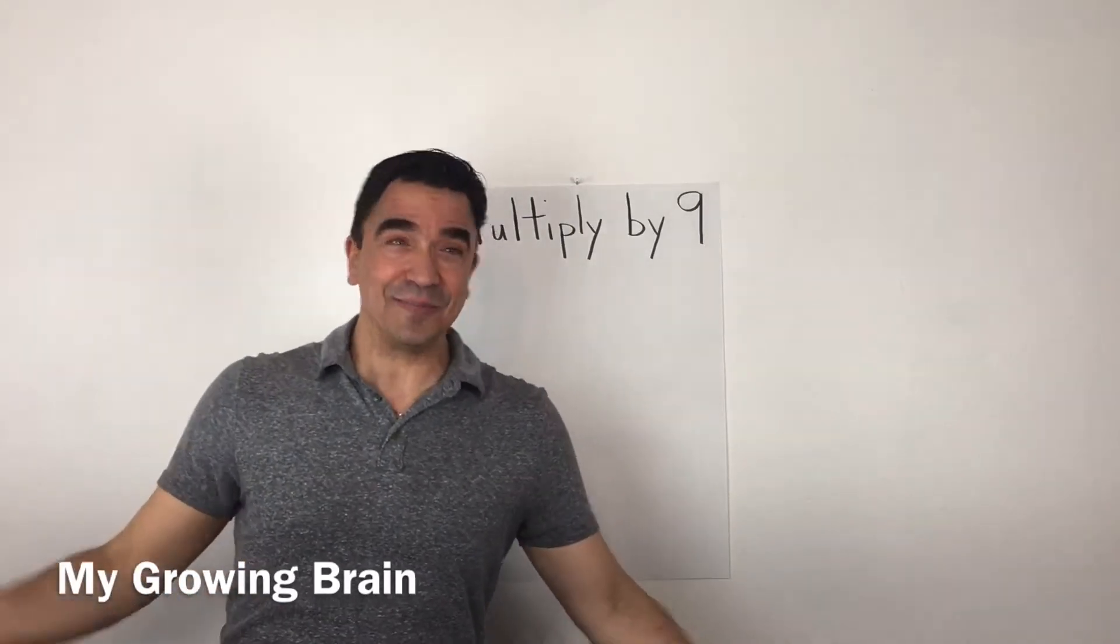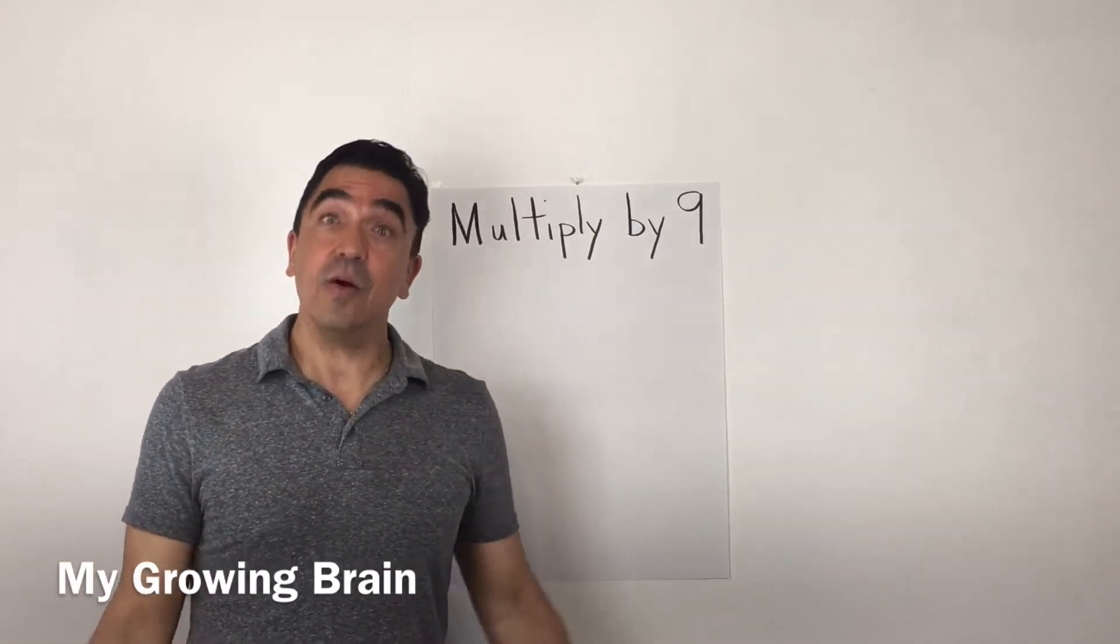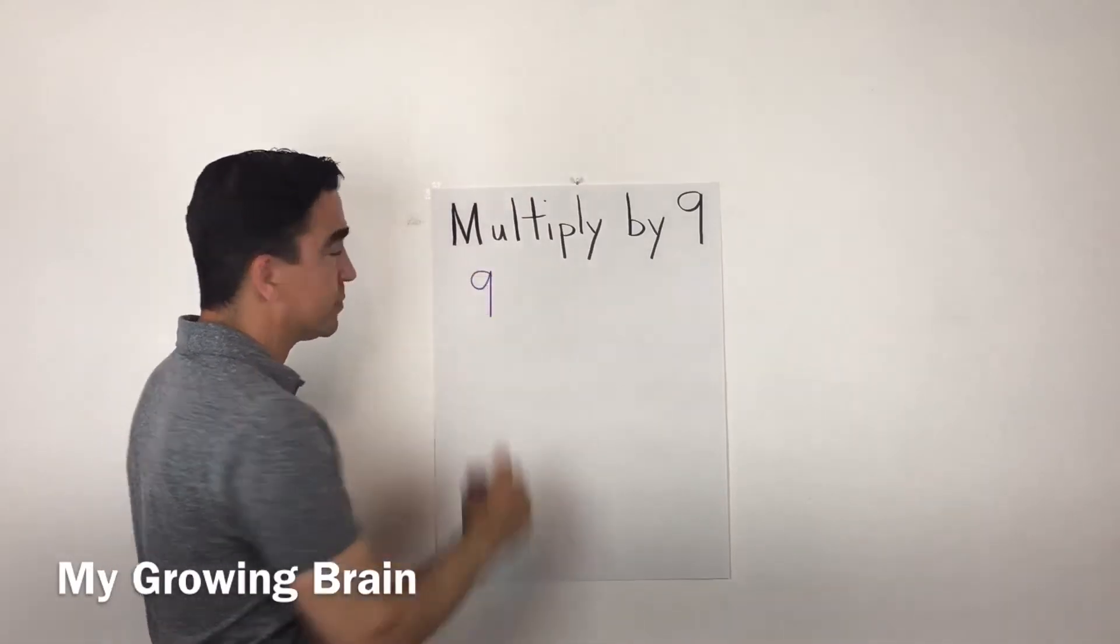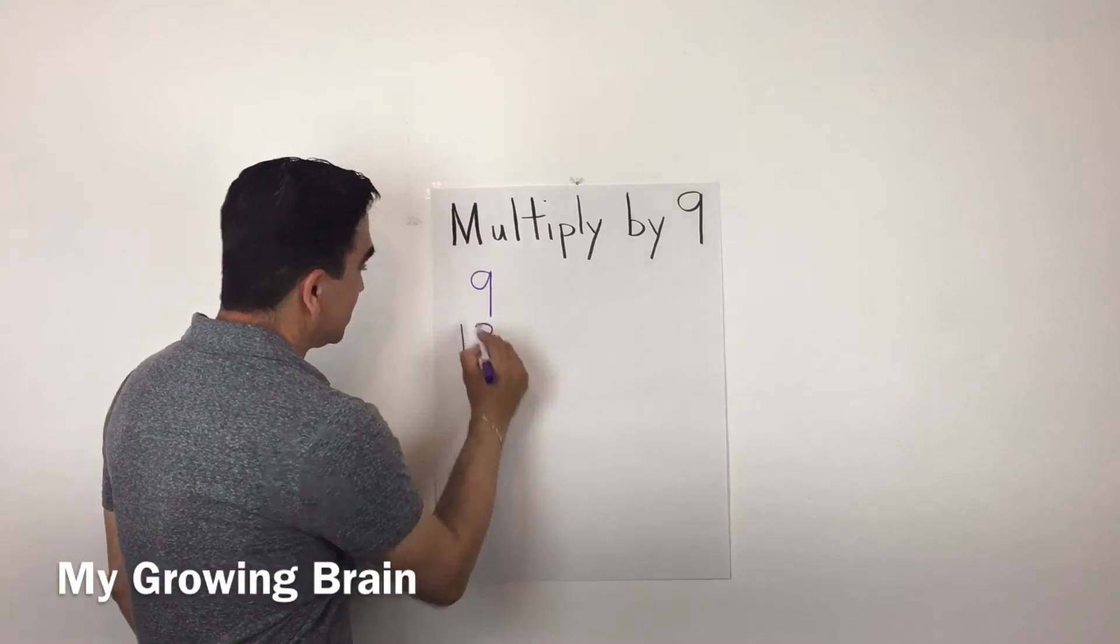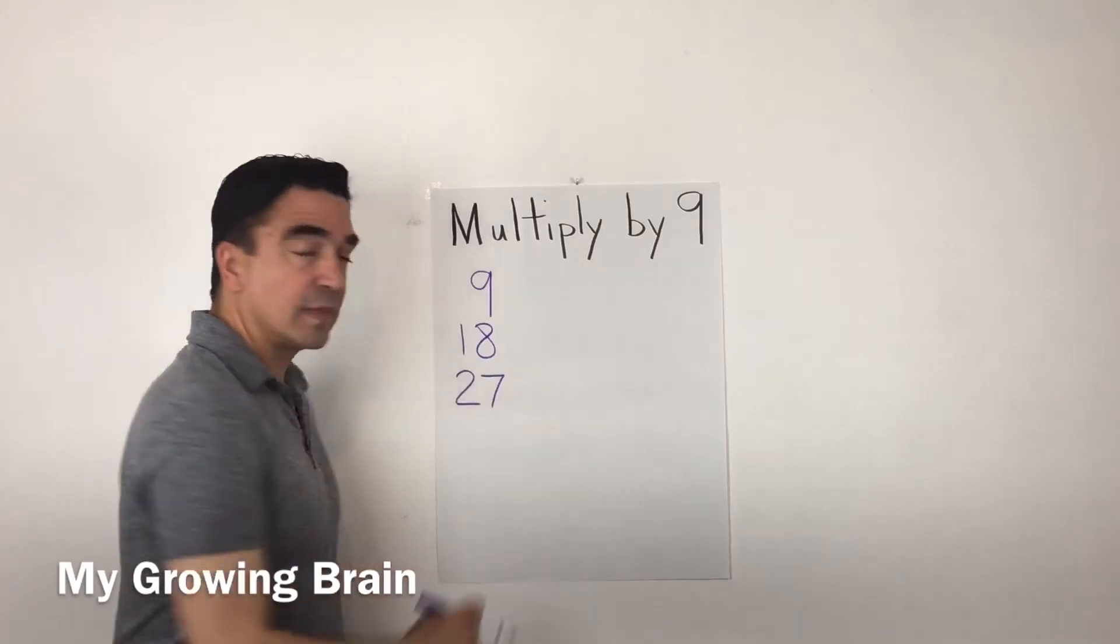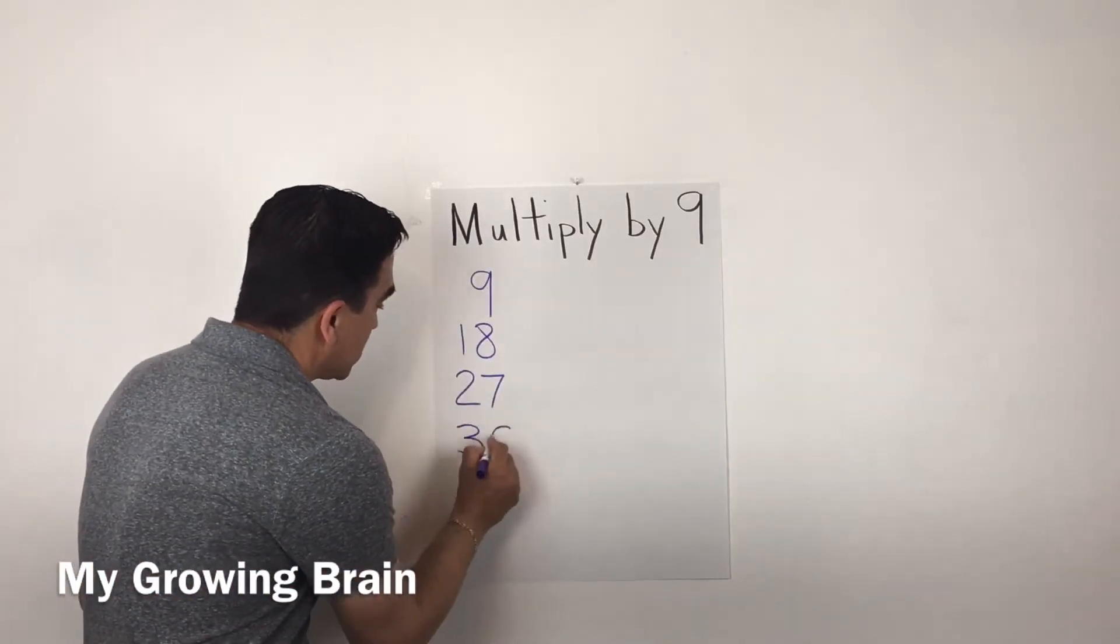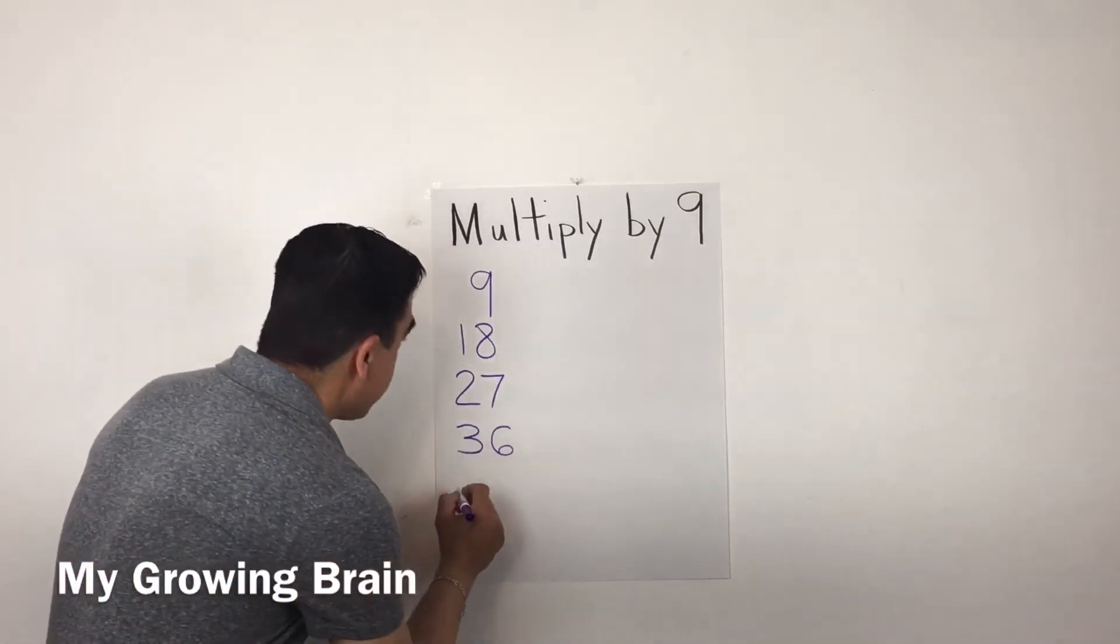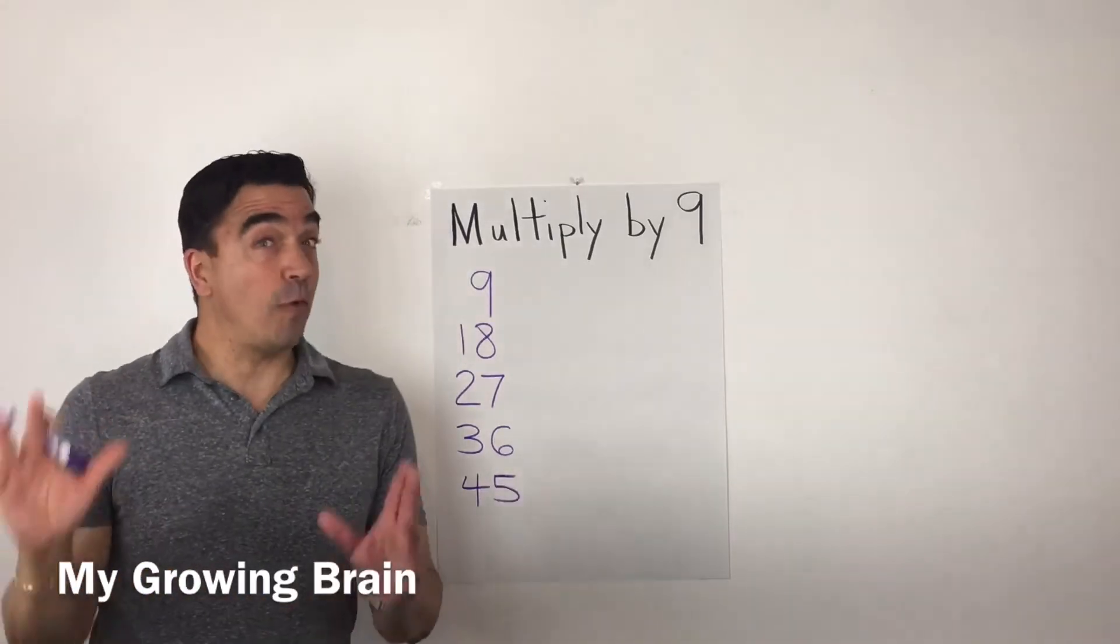It's skip counting. We're going to skip count by nine. Watch. Nine, eighteen, twenty-seven, thirty-six, forty-five.